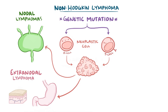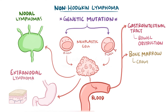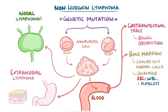Lymphoma cells can also get into the blood and spread to other parts of the body. If they get into the gastrointestinal tract, they can cause bowel obstruction. If they go to the bone marrow, they can crowd out normal progenitor cells and decrease the number of healthy red blood cells, white blood cells, and platelets. And if they go to the spinal cord, they can cause spinal cord compression.